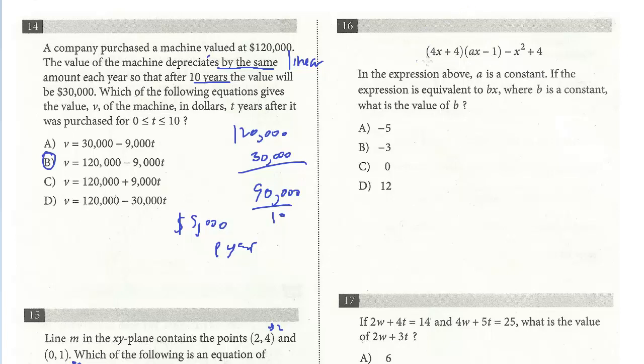The first step is you really have to multiply this out. So I'm going to multiply, we get 4ax squared, and then I get minus 4x plus 4ax minus 4. And then I'm going to add these two terms: minus x squared plus 4. And this is all equal, it's equivalent to bx.